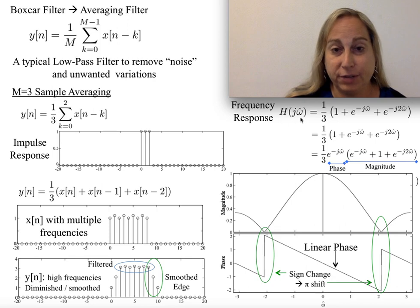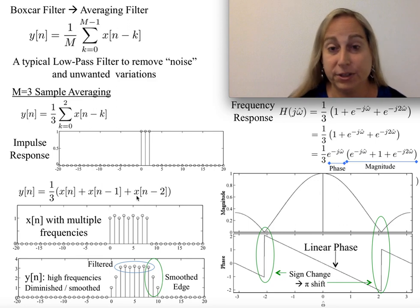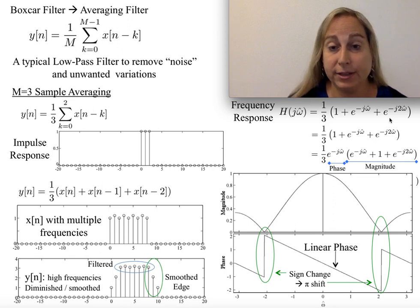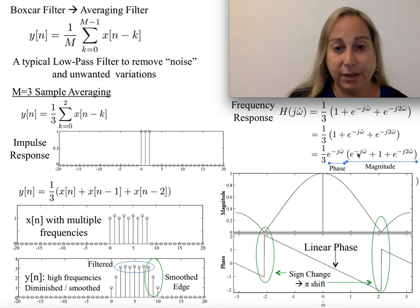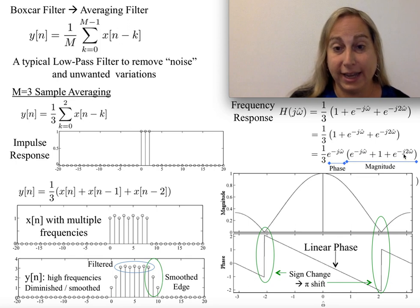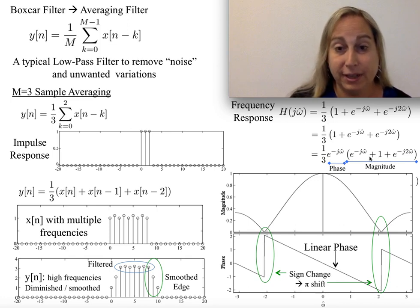Another way to look at this is to ask: what is the frequency response H(jω)? We know the impulse response, so we have three coefficients for those three terms. If you think about the z-transform, you have z⁻¹ and z⁻² terms. This gives us one-third times the quantity 1 plus e to the minus jω̂ plus e to the minus 2jω̂, which gives us something expressed in terms of ω̂.